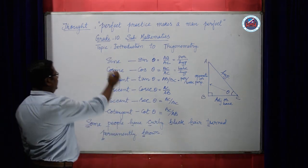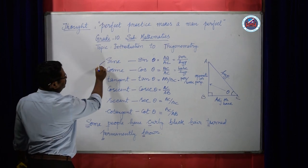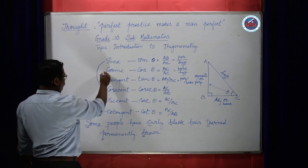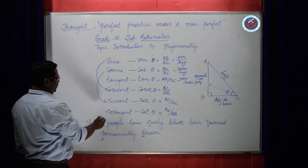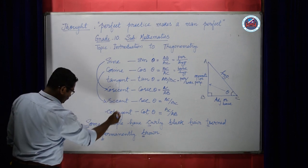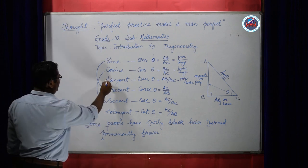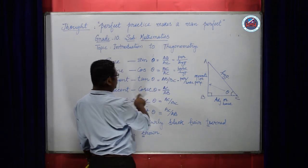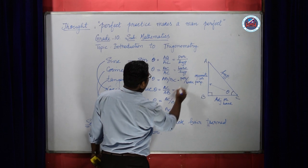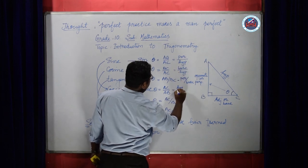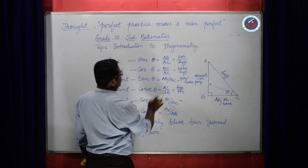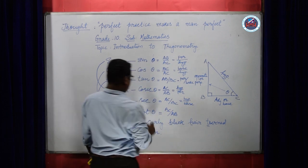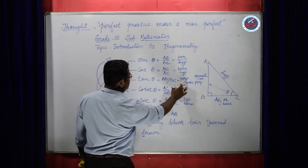Then the other three: as I have already said, sin and cosecant are reciprocals of each other. Cos and sec are reciprocals of each other. So if you know these three, you can work out the others. Cosecant theta is hypotenuse by perpendicular. Sec theta is hypotenuse by base. Cot theta — the reciprocal of tan theta — is base by perpendicular.